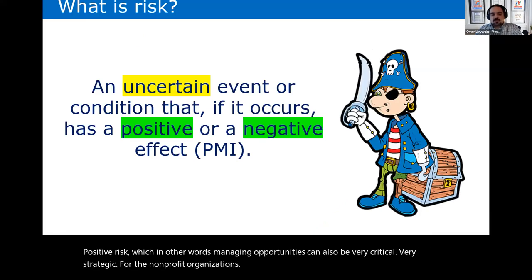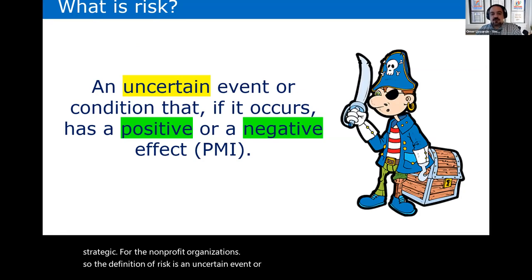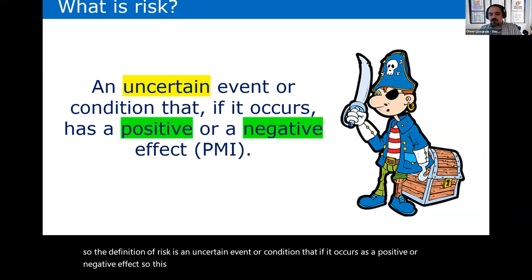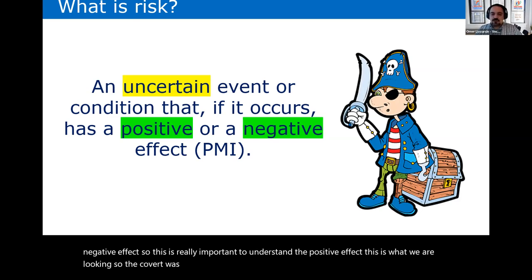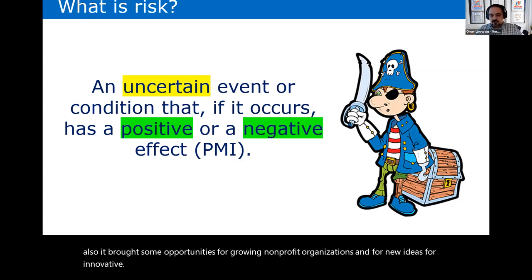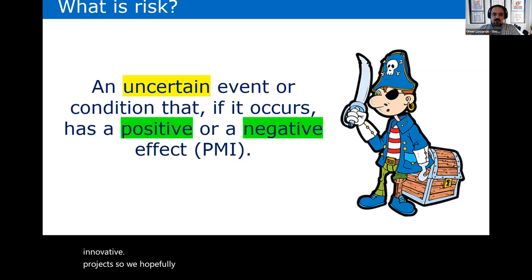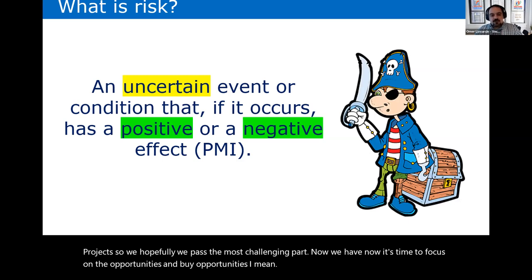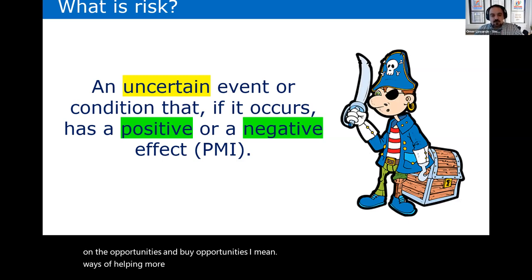The definition of risk is an uncertain event or condition that, if it occurs, has a positive or negative effect. The positive effect is really important to understand. COVID was terrible and brought lots of negative things, but it also brought opportunities for growing nonprofit organizations and new ideas for innovative projects. Now that we've hopefully passed the most challenging part, it's time to focus on the opportunities — ways of helping more people, improving our impact, and growing.